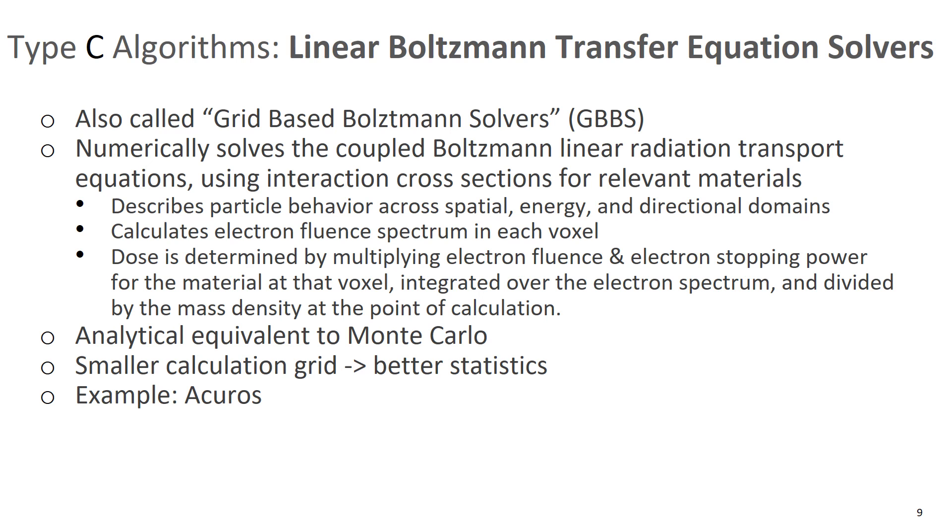So for Monte Carlo, we get better statistics when we have more events. Here with these algorithms, we get better accuracy with a smaller calculation grid when you're dividing those voxels into smaller and smaller pieces. An example of this that you'll see clinically is called ACUROS. So that's a very common linear Boltzmann transfer equation solver that's actually used clinically. Thank you.